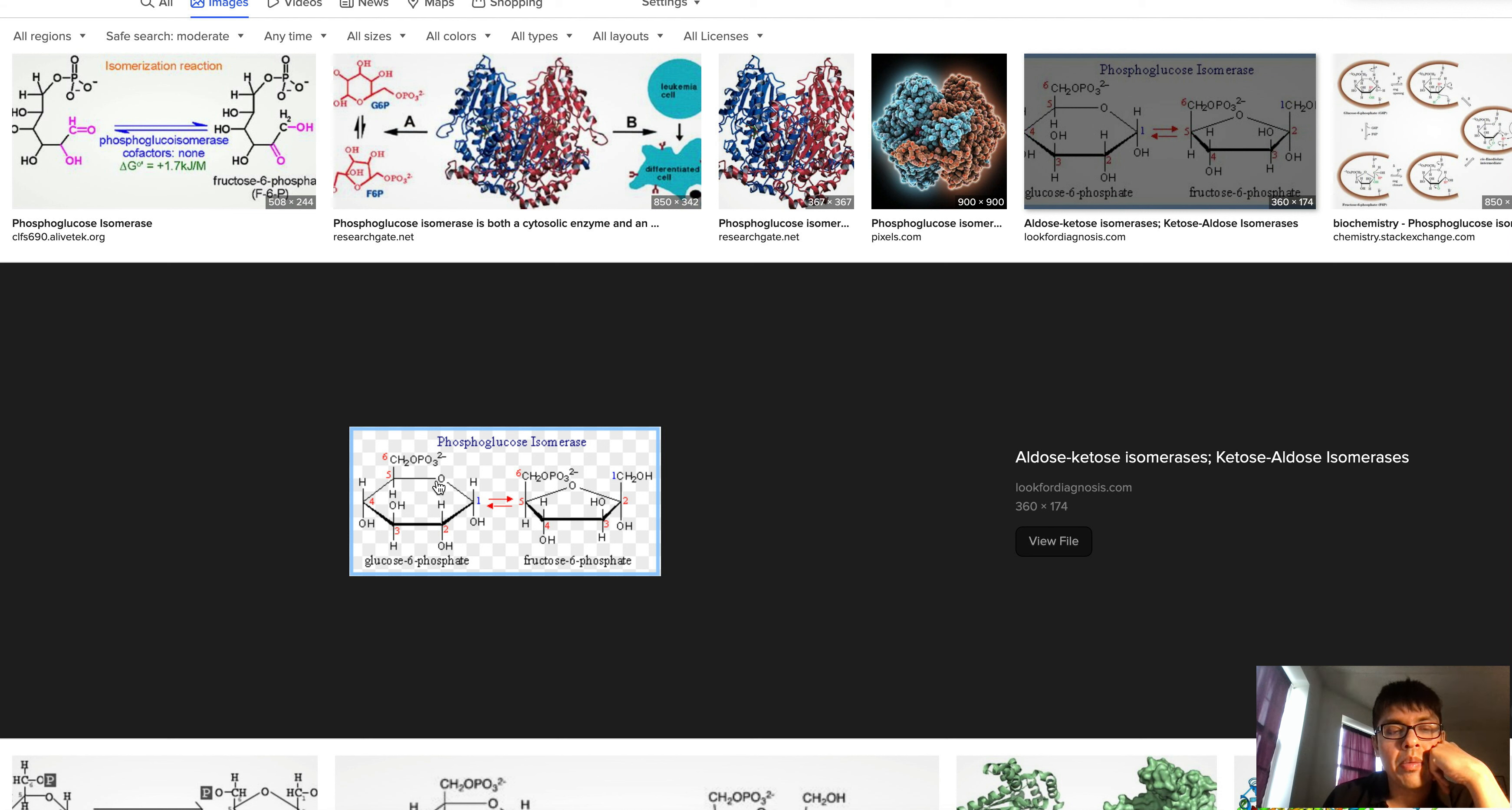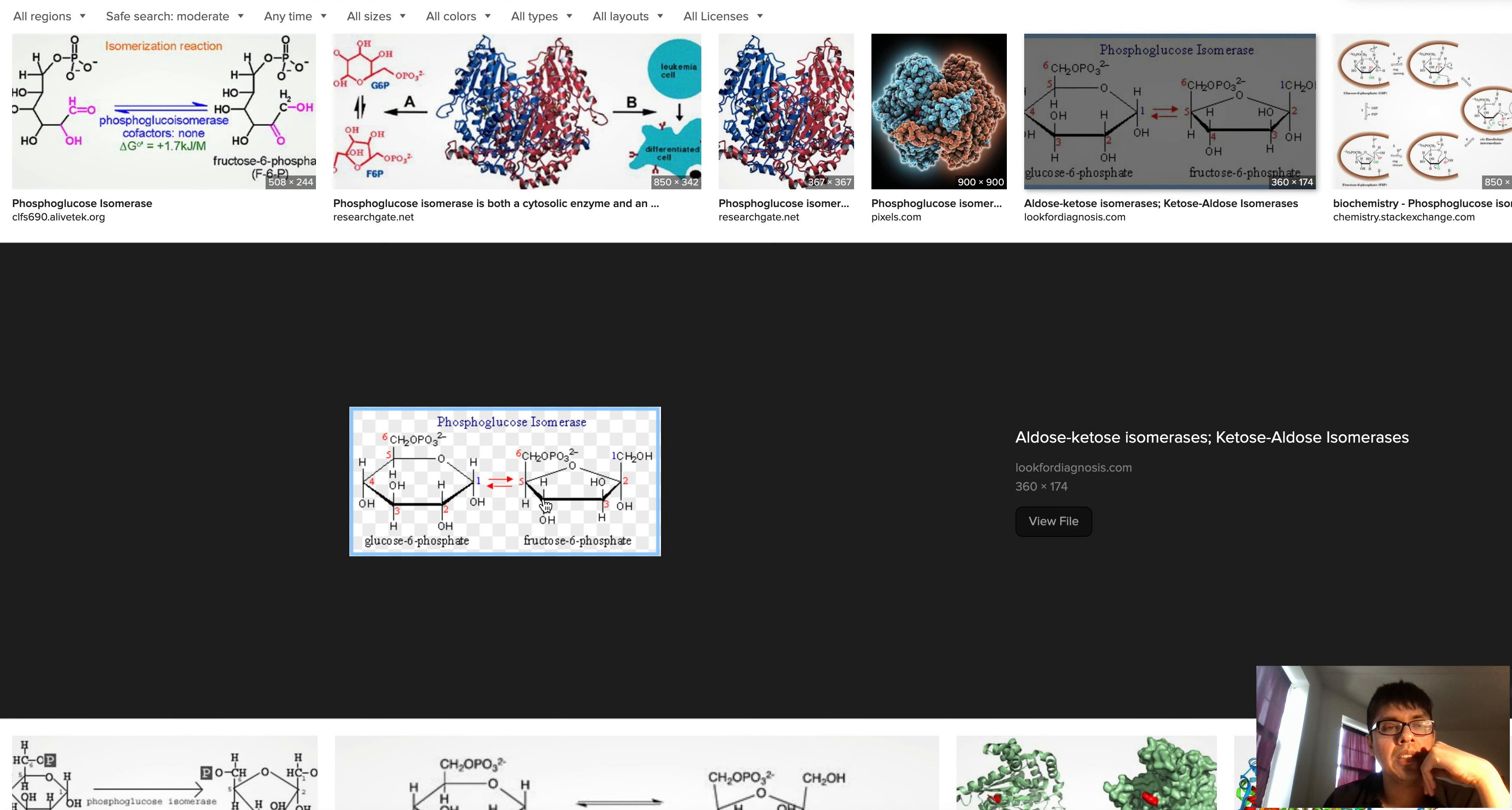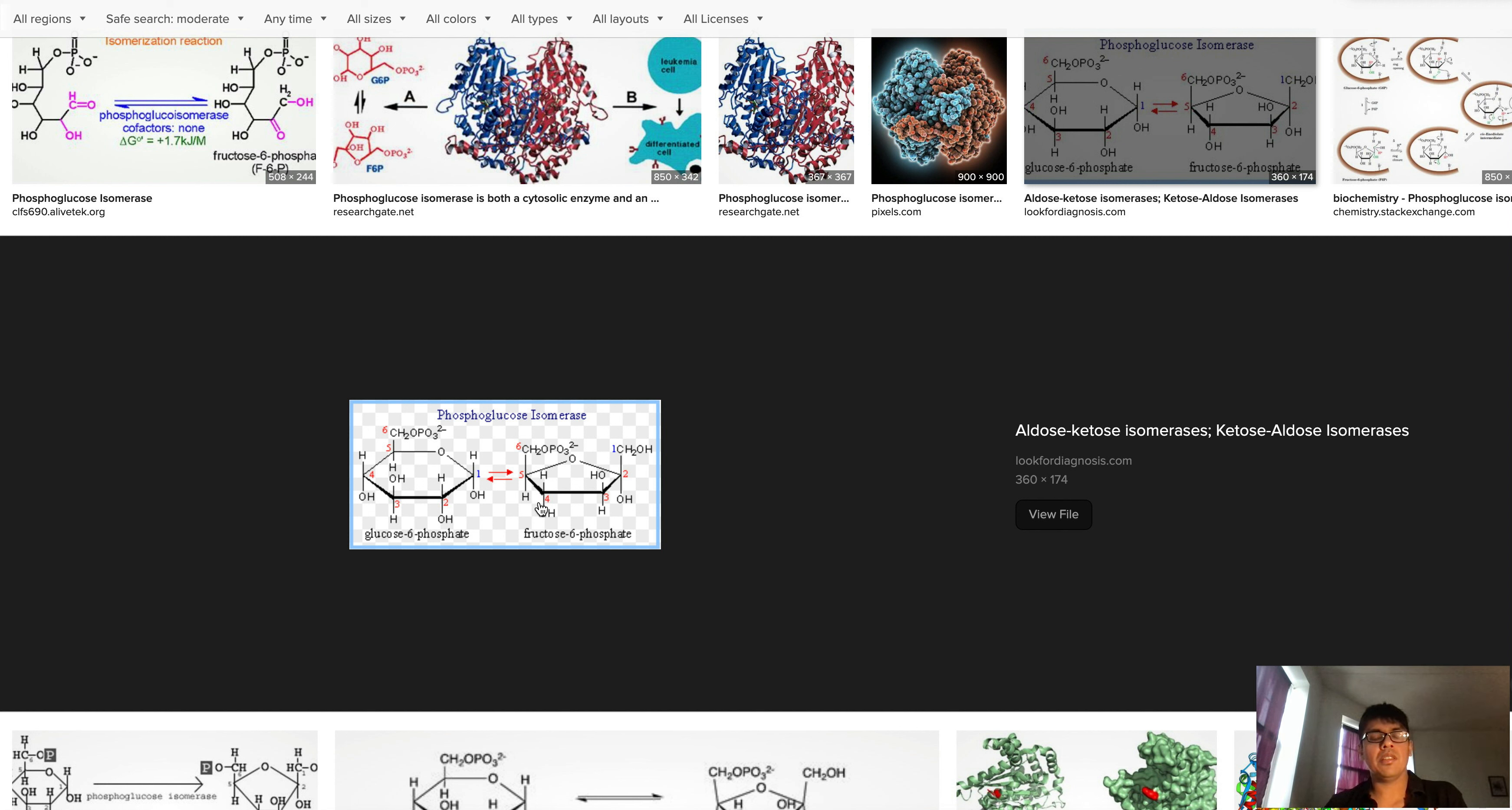Basically, you can think about the aldose versus ketose without getting too much into the properties of aldehydes and ketones. An aldose sugar is one where when this hemiacetal bond here - we have to go back to our organic chemistry - this hemiacetal is broken, this ring will convert to a straight chain aldehyde. But when the bond is broken in fructose 6-phosphate, the equivalent bond, it is converted to a ketone. When you look at the straight chain versions, it'll be easier to see. Another difference in this particular case is that fructose 6-phosphate is a pentose sugar while glucose 6-phosphate is a hexose sugar.